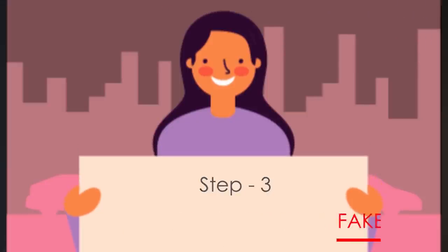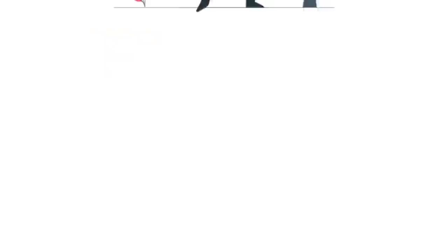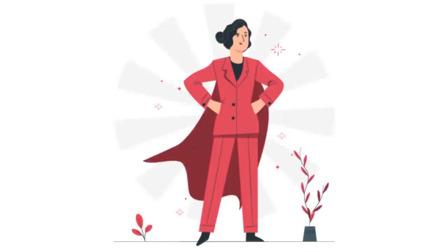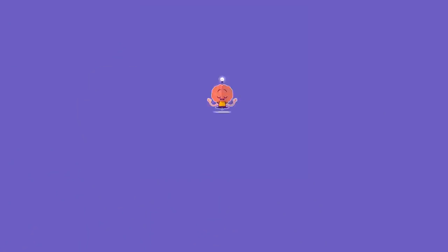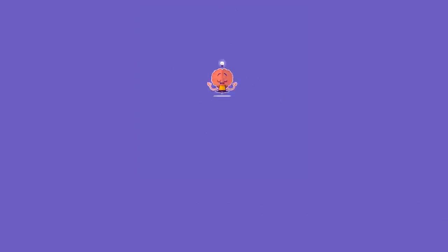Step number three: fake it till you make it. When you're talking to a confident speaker, you are nervous — I accept that, everyone gets nervous. But change your body language. You are not faking or cheating that person — you are cheating your brain. Pretend to be confident: your body language should be confident, maintain eye contact, stand erect, keep an open body posture, face the person. Due to this, your brain gets tricked and actually feels that you are confident, and you will feel more confident.